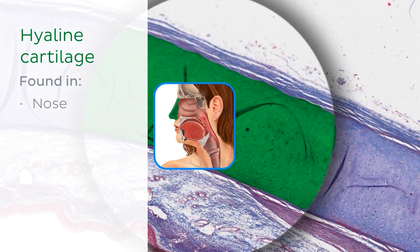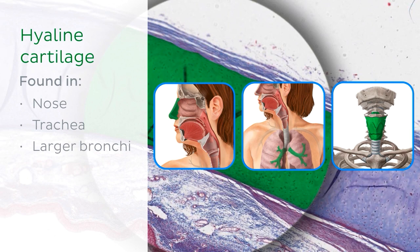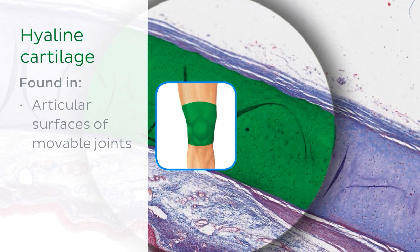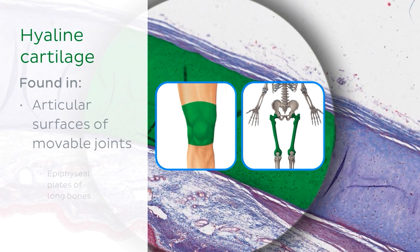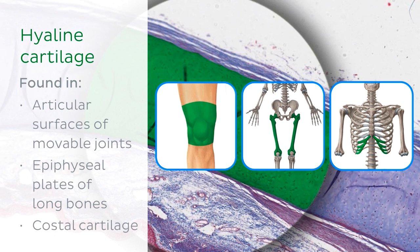It is the most widespread type of cartilage found in the body and it can be found in the nose, the trachea, larger bronchi, the cartilages of the larynx, the articular surfaces of movable joints, the epiphyseal plates of long bones, and the costal cartilages.